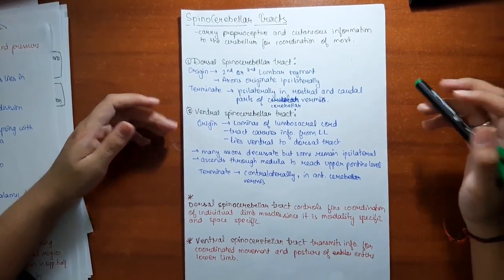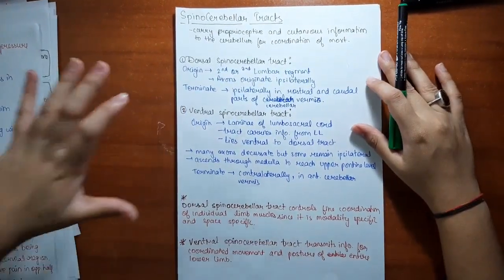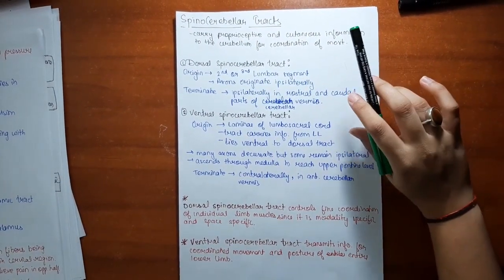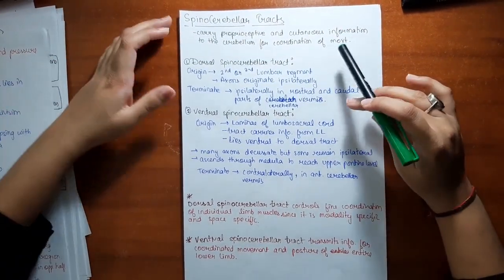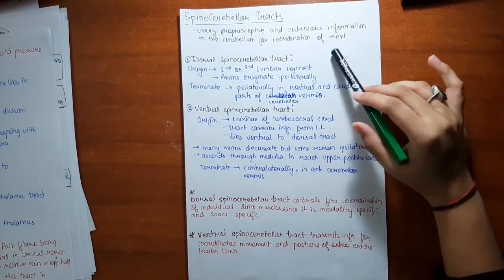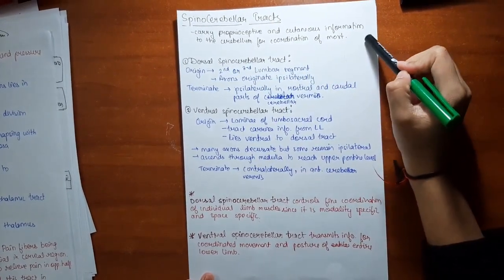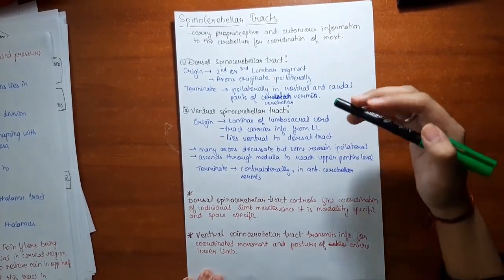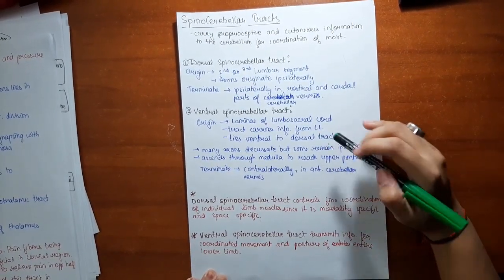Now let's move to the spinal cerebellar tract. Before the details, let's discuss the functions of the cerebellum. It is mainly responsible for tone, posture, and muscle coordination, especially ipsilaterally. Whenever we discuss any cerebellar tract or cerebellar syndrome, these functions will be hindered. The spinal cerebellar tract carries proprioceptive and cutaneous information to the cerebellum for coordination of movement. It is divided into the dorsal spinal cerebellar tract and the ventral spinal cerebellar tract.